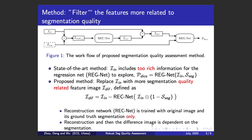We want our reconstruction network to only reconstruct the image well if the input segmentation quality is high. Therefore, we train our reconstruction network using only pairs of the original image and its ground-truth segmentation. The reconstruction and the difference image will then be dependent on the segmentation quality.